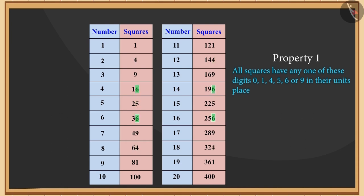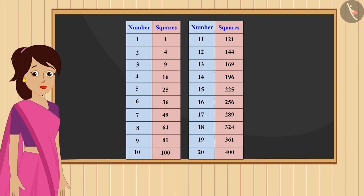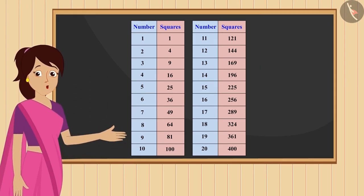Yes, you will see that the squares have any one of these digits: 0, 1, 4, 5, 6, or 9 in their units place.